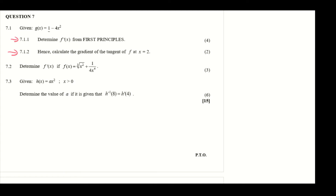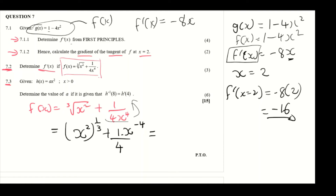Moving to question 7.2, we determine the derivative of f(x) equals the cube root of x squared plus 1 over 4x to the power 4. The first step is to rewrite it in a differentiable form: x squared to the power 1 over 3, plus bringing the denominator up gives 1 over 4 multiplied by x to the power minus 4.